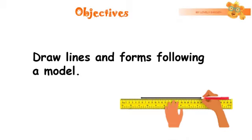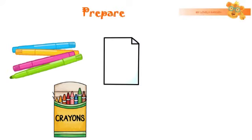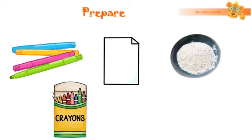The objective that we are going to cover in this session is draw lines and forms following a model. Dear kids, prepare your felt pens or crayons, a piece of paper, a ball of flour, and don't forget your worksheet.